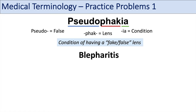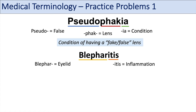The next medical term we're going to practice with is blepharitis. The prefix blephar means eyelid, and the suffix itis means inflammation. So blepharitis is an inflammation of the eyelids. This is a common occurrence in older patients.